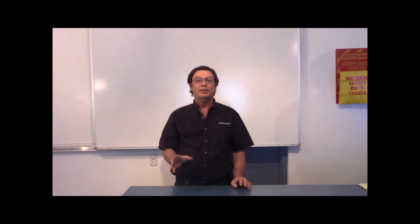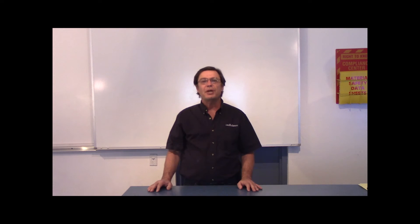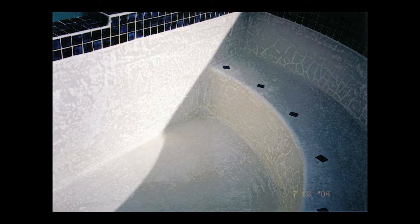After the bond failure nodules, the next most common type of nodule is craze crack nodules. These are the types of nodules that form in small cracks on the surface of the pool plaster.